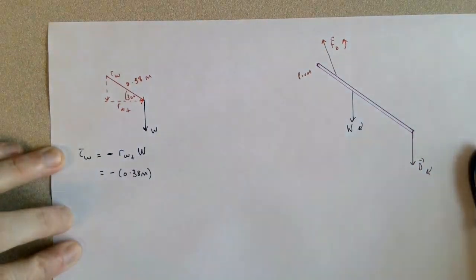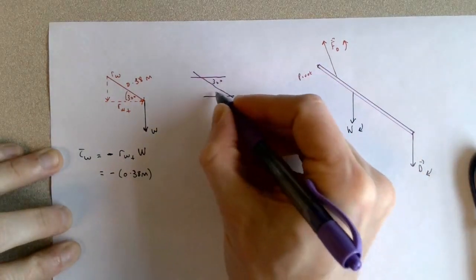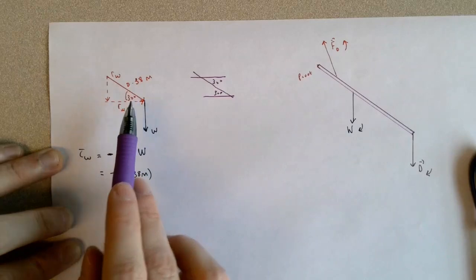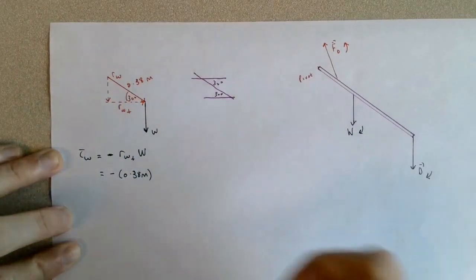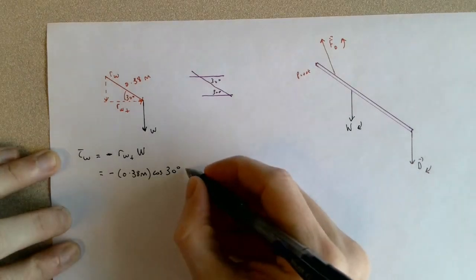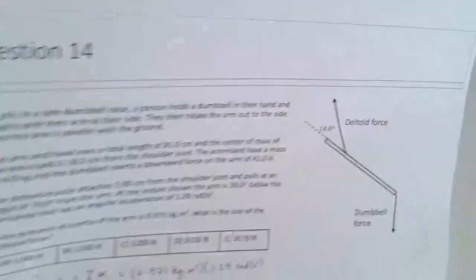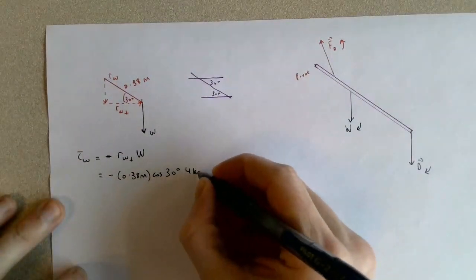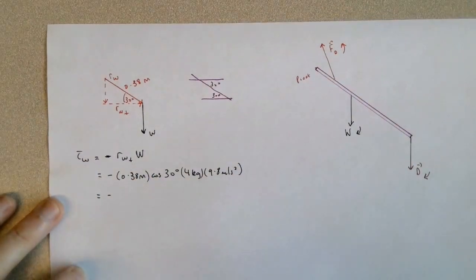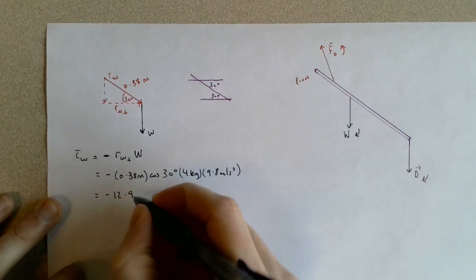Just a little extra work here. We know the arm is at 30 degrees below the horizontal, which means that this angle in here is also 30 degrees. You can either do the 0.38 times the cosine of 30 or 0.38 times the sine of 60. I'll use the cosine of 30 degrees here. I'm trying to find this side here. Times the weight, and from the problem they told us the mass of the arm is 4 kilograms. So this is 4 kg times 9.8 m/s². This leaves us with the torque of negative 12.9 Newton meters.